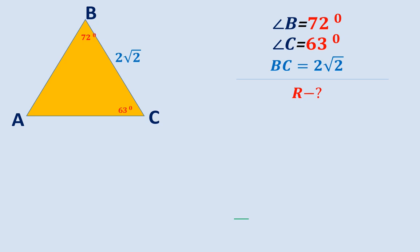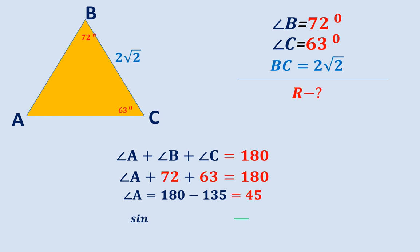Since we already have the length of BC, all we have to do is find the sine of angle A. Given that the sum of the angles of a triangle is equal to 180 degrees, we get angle A plus 72 plus 63 is equal to 180 degrees, so angle A is equal to 45 degrees.